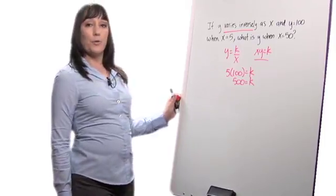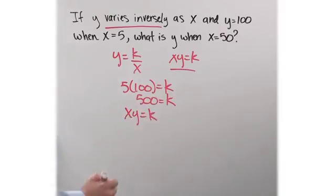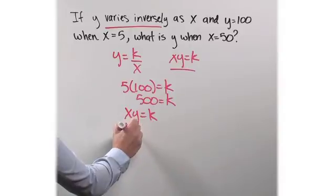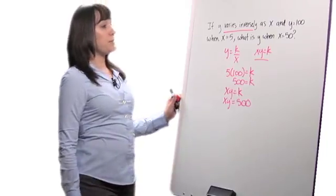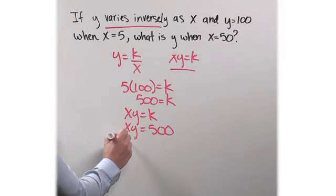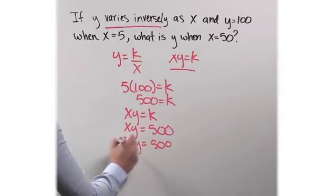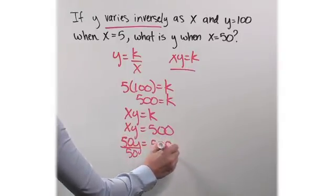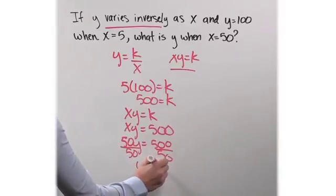Now, I rewrite my formula. xy equals k. Replace k with 500. xy equals 500. Now, they're asking me, what is y when x is equal to 50? So I have 50y equals 500. Divide both sides by 50, and I get that y equals 10.